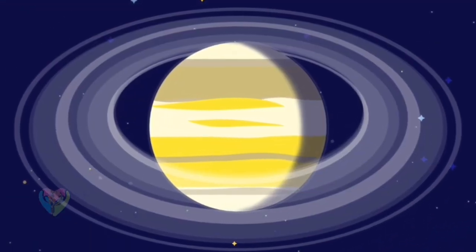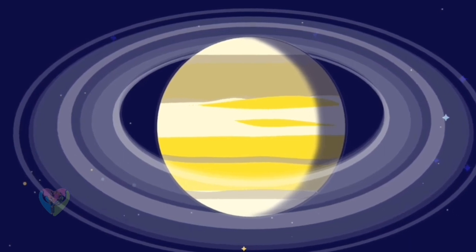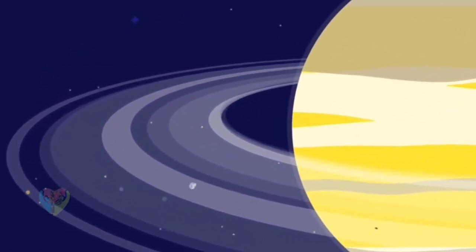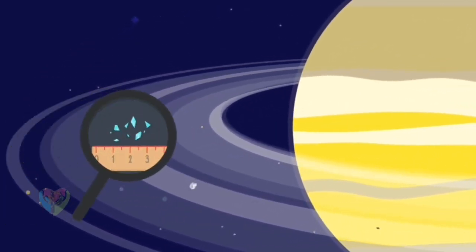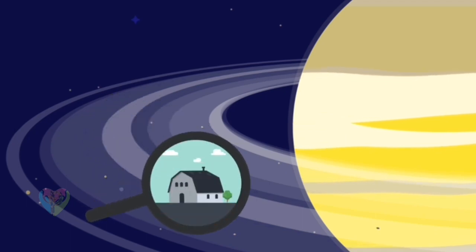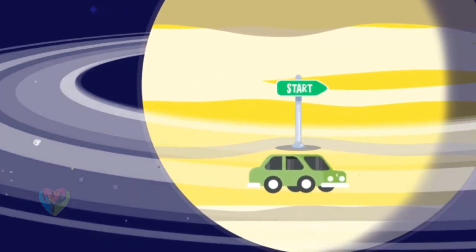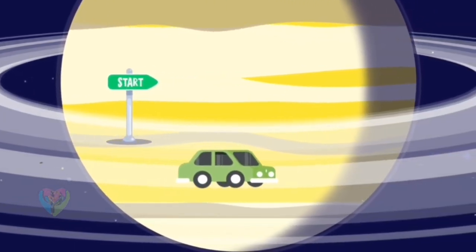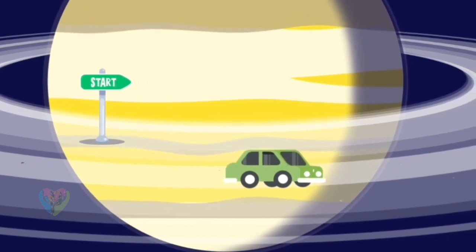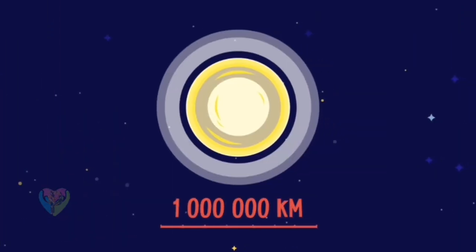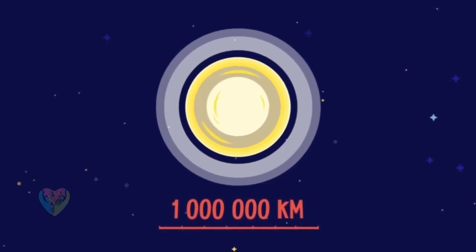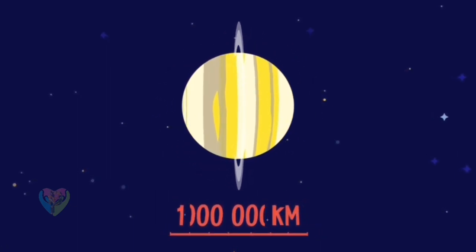Saturn is famous for its rings, which consist of a large number of ice particles, ranging in size from specks of dust to a three-story house. To ride along one of the rings in a car, we would need a long journey over a year. At the same time, the rings are so thin, that if we were on the equator of Saturn, we would not even notice them.